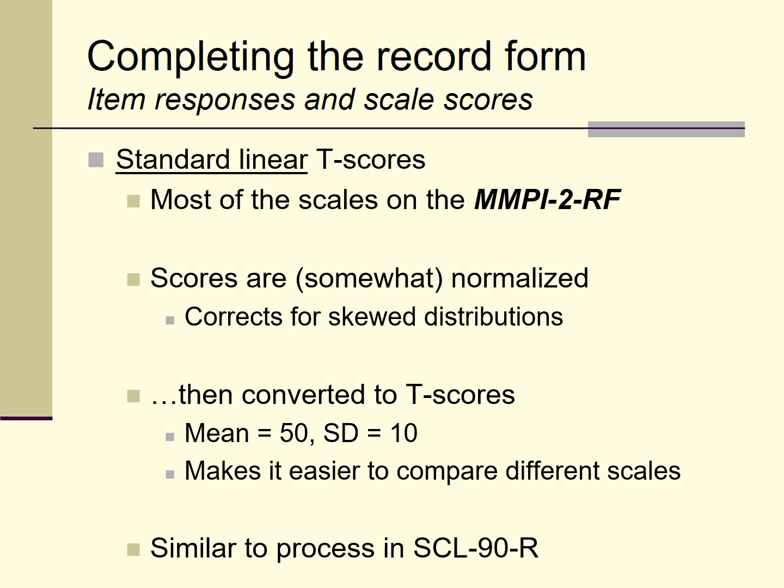The record form includes individual items — true or false questions corresponding to symptoms, attitudes, or beliefs — and raw scores for different scales, which are simply the sum of the items making up each scale. Most scales are then transformed using a uniform T-score transformation, producing a mean of 50 and standard deviation of 10, making it easier to compare different scale score elevations.